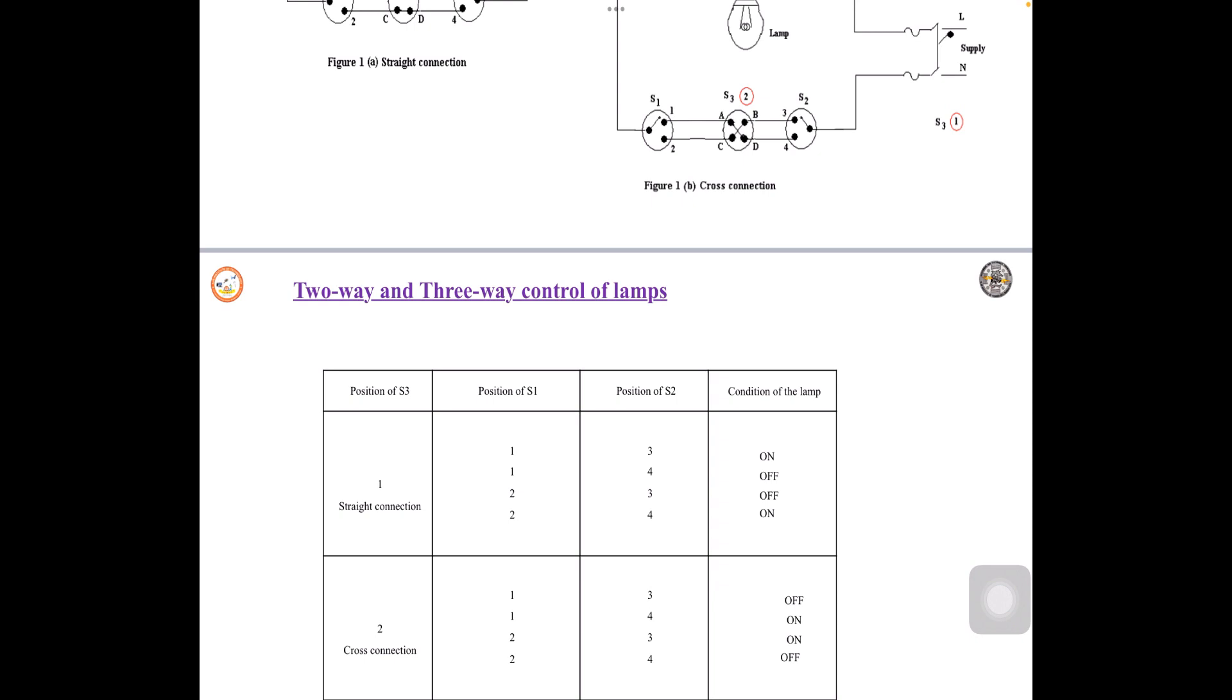Next is 1 to 4. 1 to 4, yes, there is a connection you can observe. That is S1 to 1, 1 to A, A to D, D to 4. 4 is again connected back to neutral supply. The switch is on.